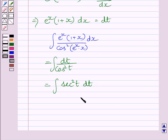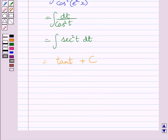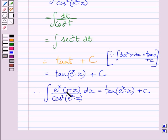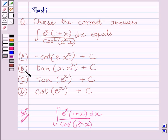By using the formula of integration, the integral of sec²(t) dt equals tan(t) + c, where c is the constant of integration. Since t = e^x · x, we substitute back to get tan(e^x · x) + c. So the integral of e^x dx upon cos²(e^x · x) equals tan(e^x · x) + c. The correct answer is (b).